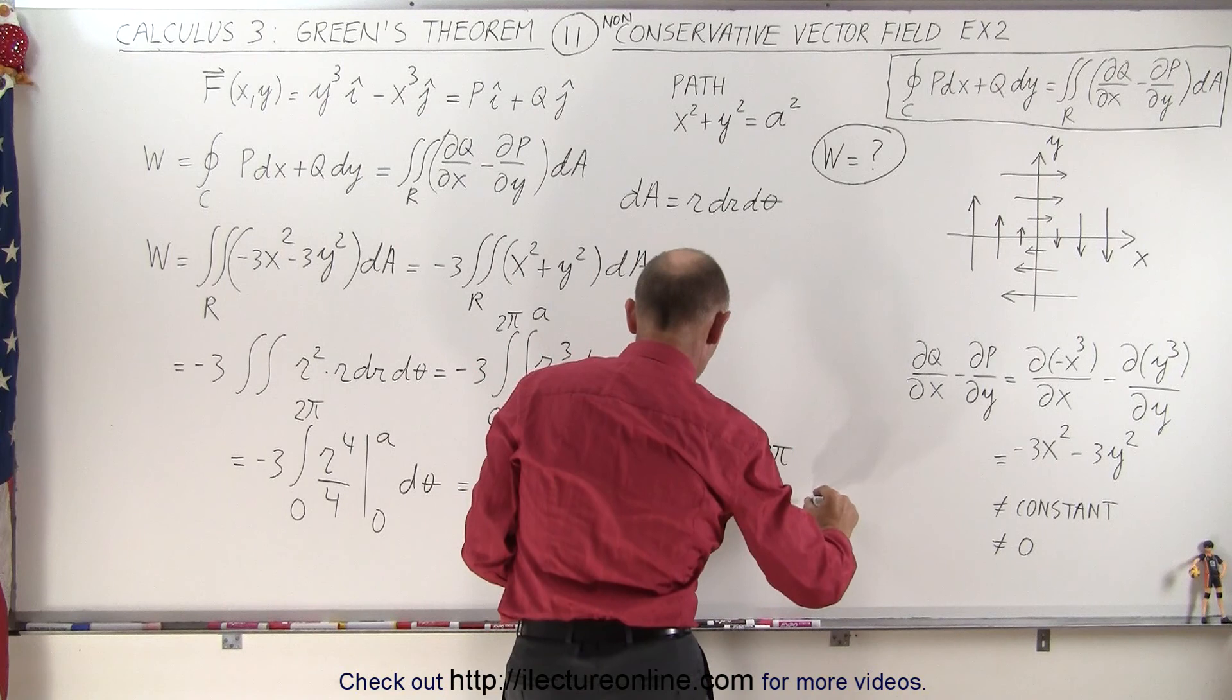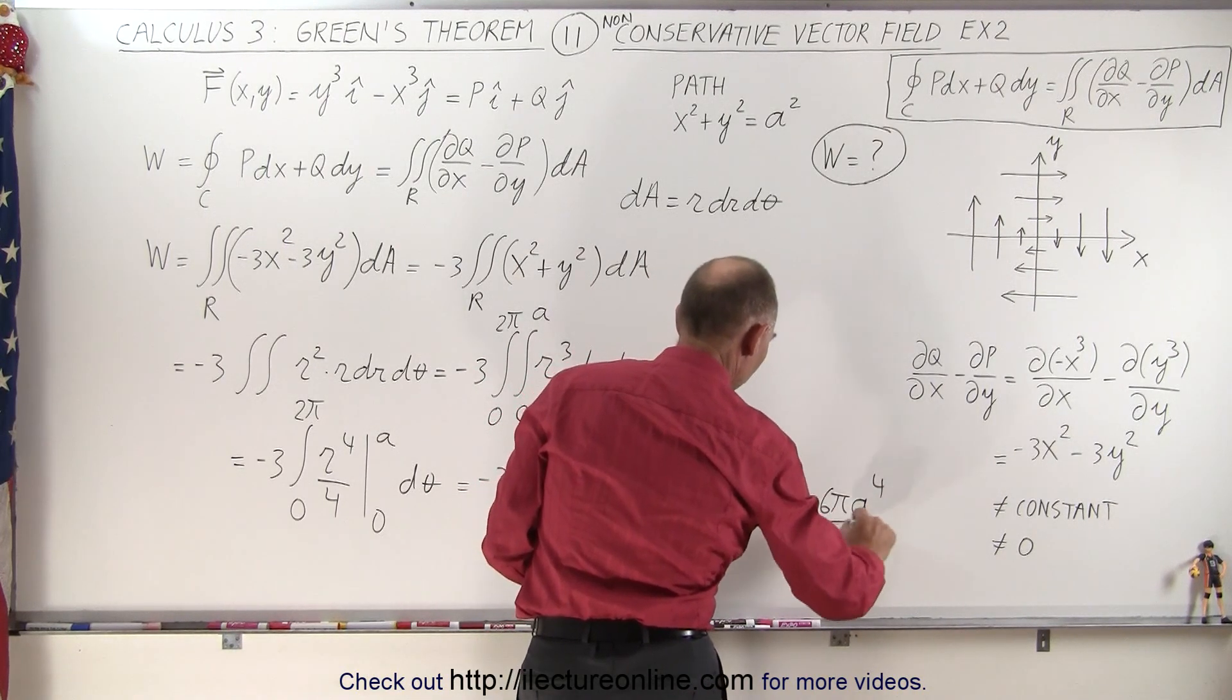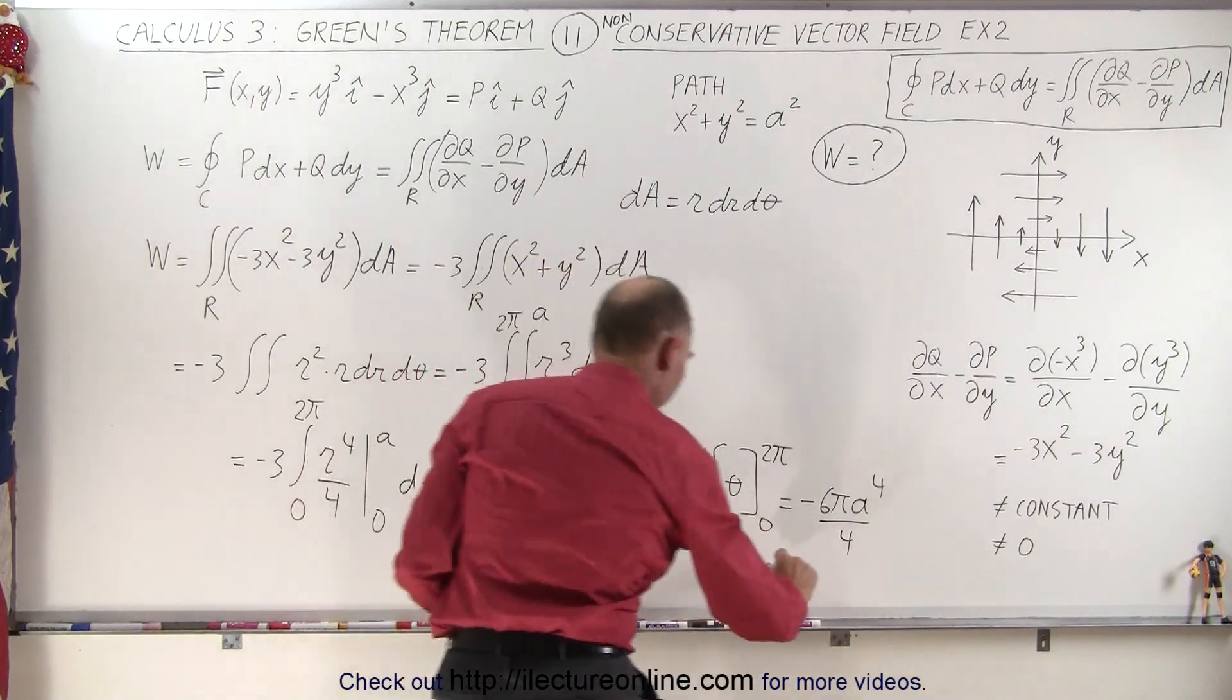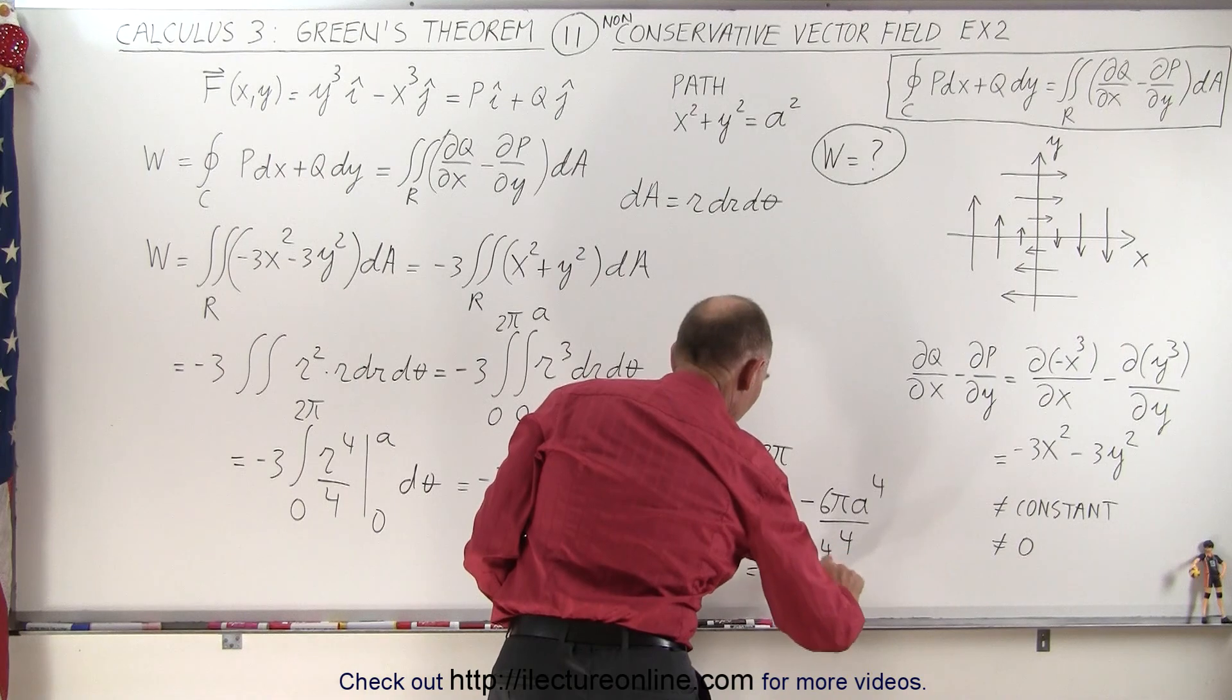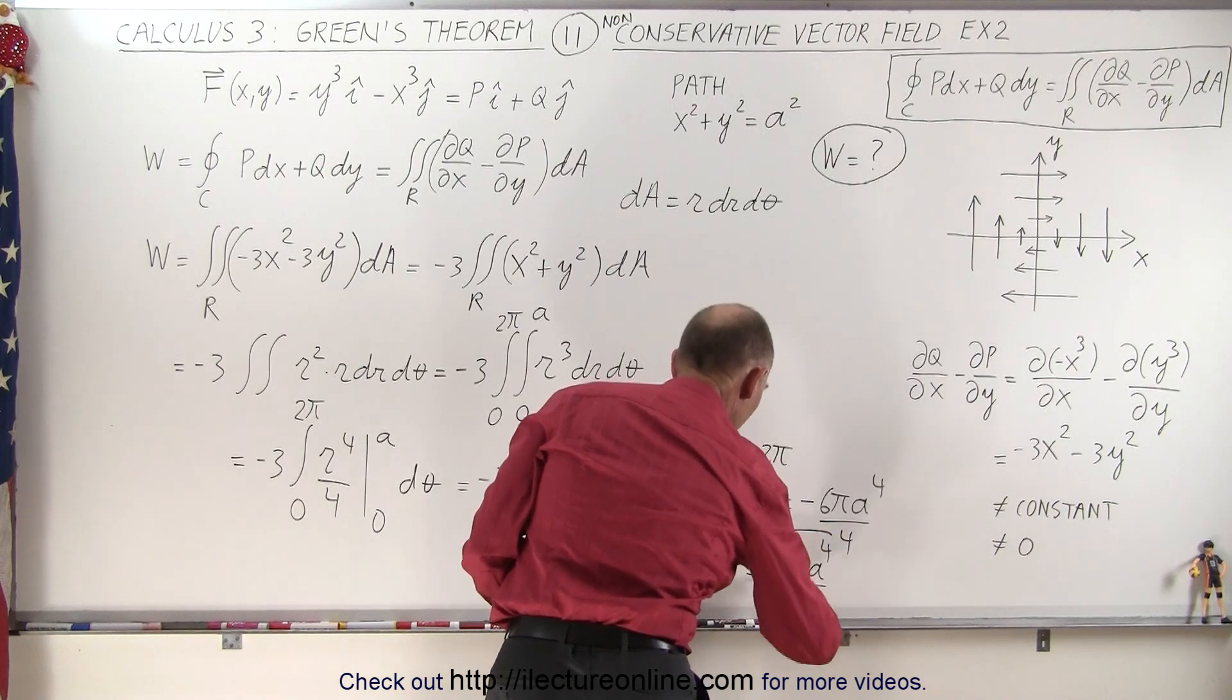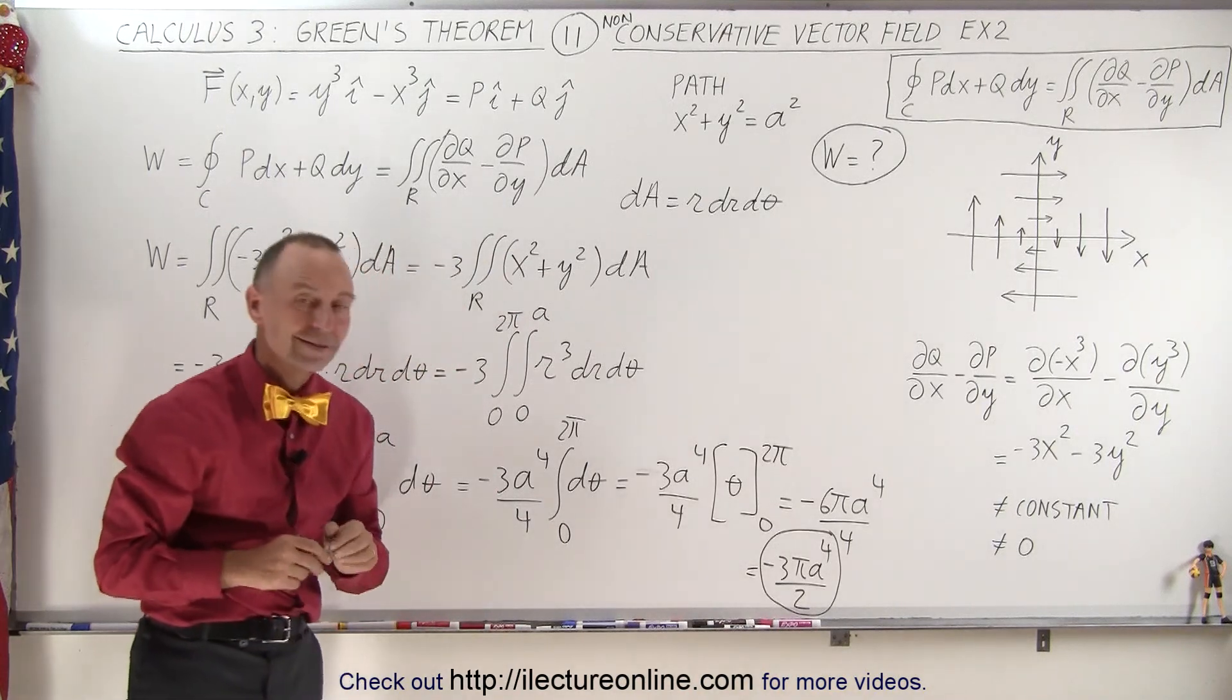Let's see here, let me just write it out. So it would be minus 6 pi a to the 4th over 4, which is equal to minus 3 pi a to the 4th over 2. Sometimes it's better just to write things out, not to make silly mistakes on simple things.